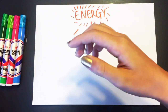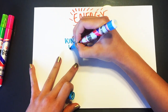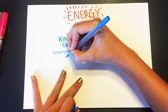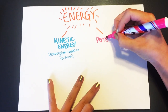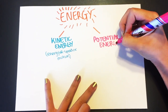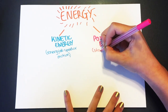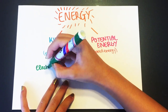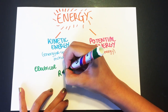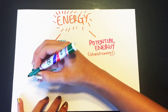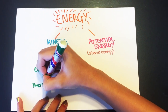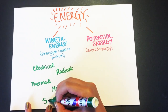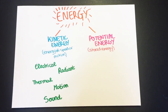The first category is kinetic energy, which is energy in motion — motion of waves, electrons, atoms, molecules, and substances. Under kinetic energy there's electrical energy (the movement of electrical charges), radiant energy (electromagnetic energy like solar energy, light, X-rays, or radio waves), thermal energy (heat energy), motion energy (movement of an object or substance), and sound energy (the movement of energy through substances and waves).